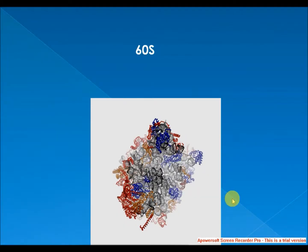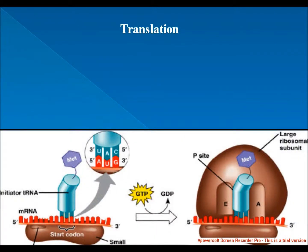The 23S rRNA also contributes the active site — the peptidyl transferase center (PTC) — of the ribosome. The rRNA core is decorated with dozens of proteins.